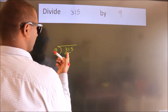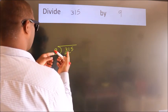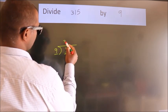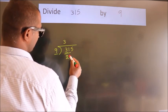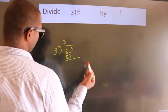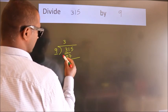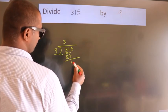A number close to 31 in 9 table is 9 threes, 27. Now, we should subtract. We get 4.